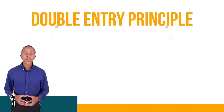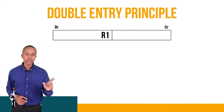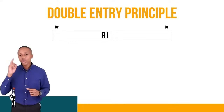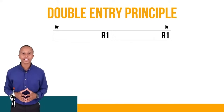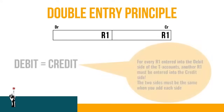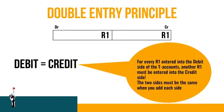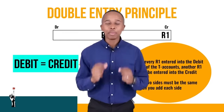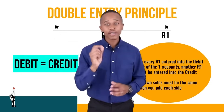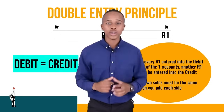Let's look at the very important accounting principle — this is the double entry principle. For every one rand placed on the debit side of the general ledger, another one rand has to be put on the credit side. This is the double entry principle: the two sides must be the same. When you add each side, the debit must equal the credit.